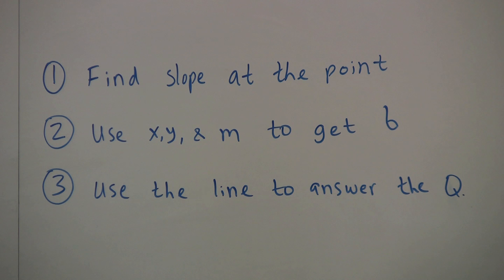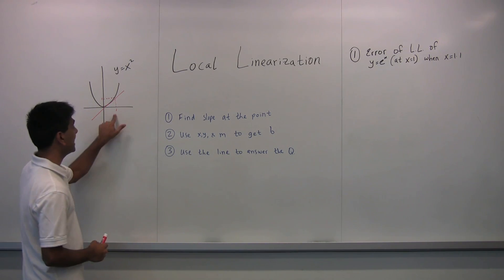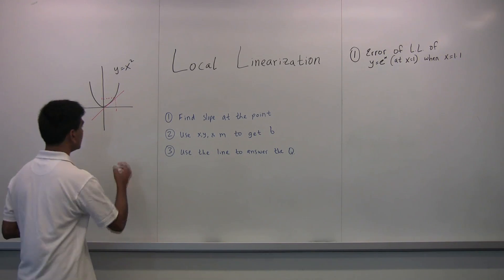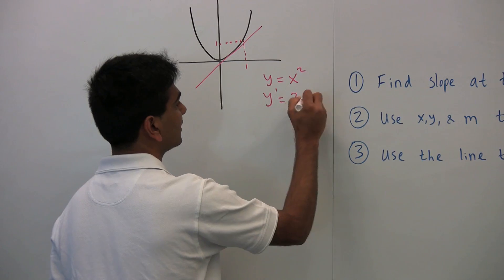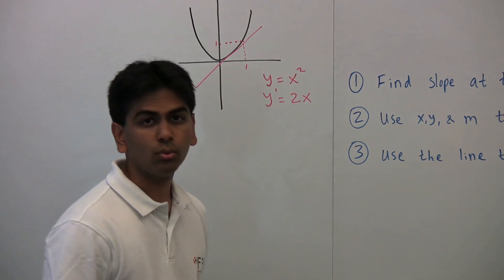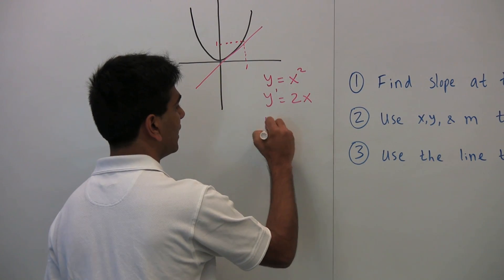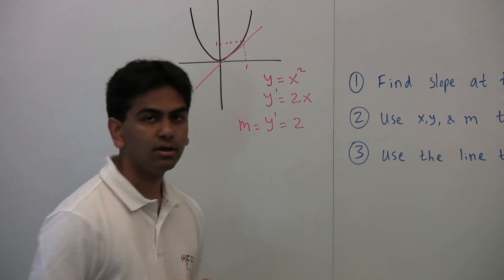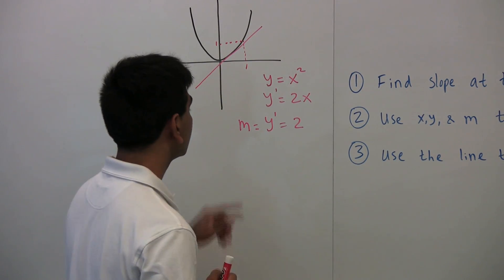The first one is to find the slope at that point. So if we want to find the local linearization at x equals 1, let's find what the slope of the parabola is when x equals 1. Now since y equals x squared, we know that the derivative, y prime, is 2x from previous videos. So if we want to find the slope, meaning the derivative, when x equals 1, we'll just plug in 1 for x. When we plug in 1 for x, we see that the derivative, y prime, is 2, and so this is what m is in y equals mx plus b. So the slope of the line is going to be 2.